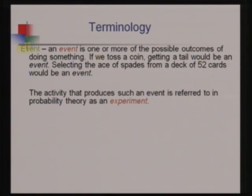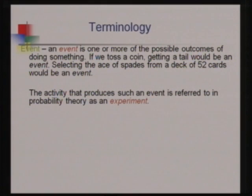If we are rolling a dice, the appearances of 1, 2, 3, 4, 5, or 6 are events produced by that activity. This activity that we perform — giving some outcomes — is called an experiment.